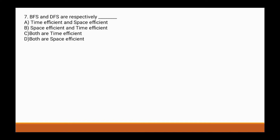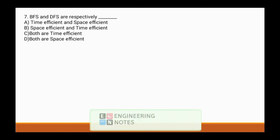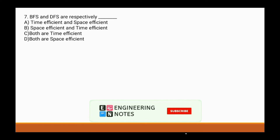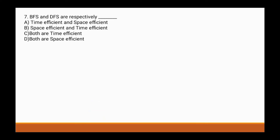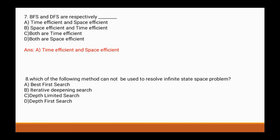Question 7: BFS and DFS are respectively important — which of the following describes them respectively? Options are: a) time efficient and space efficient, b) space efficient and time efficient, c) both are time efficient, d) both are space efficient. BFS and DFS are respectively time efficient and space efficient — option a.